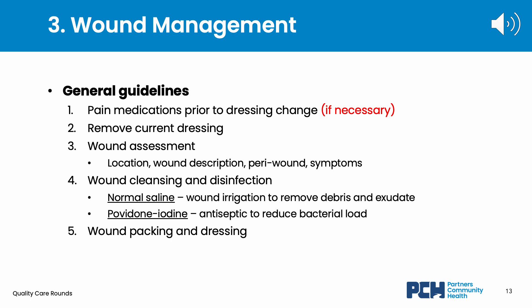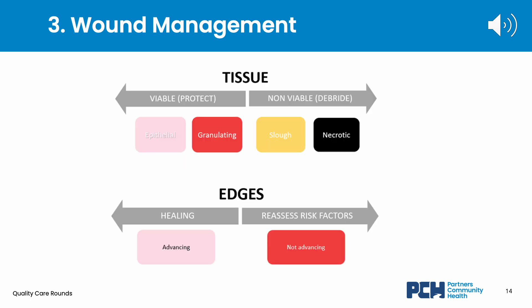This slide is meant to visualize some common principles when managing wounds. In the top diagram, granulation and epithelial tissue are considered viable tissue and therefore should be safeguarded to facilitate wound healing. In contrast, slough and necrotic tissue are non-viable and must be debrided as their presence in the wound bed prevents healing. In the bottom image, wound edges that advance and begin to approximate to one another are considered part of the healing process. If the edges are not advancing, further assessment is required to optimize wound healing.